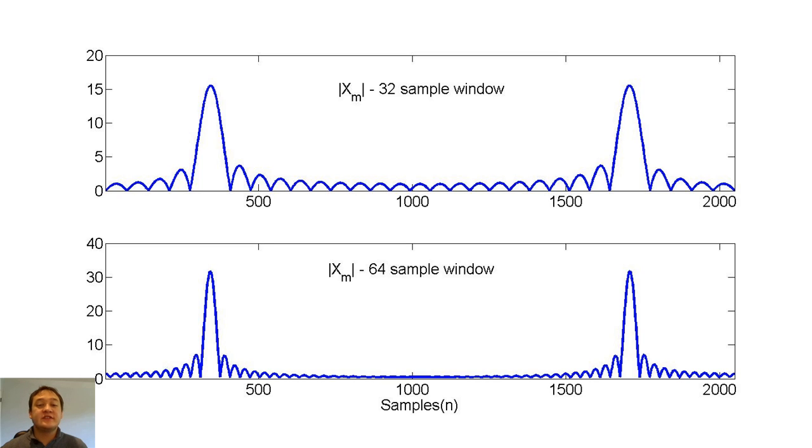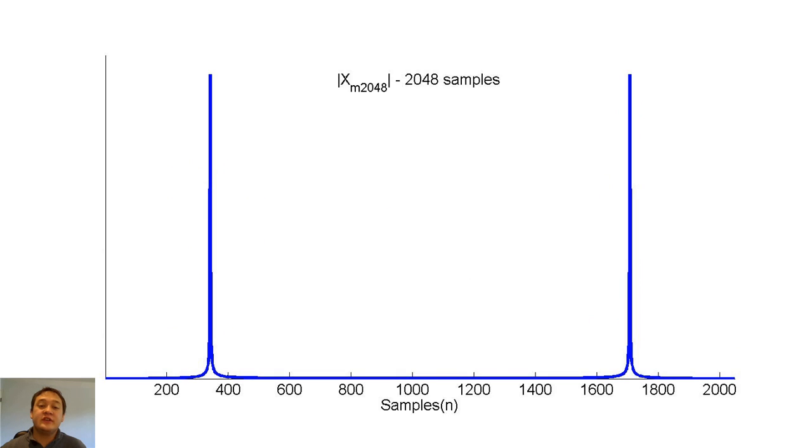Changing the window sizes changes many features of the DFT. In this figure, we can see that the increased window size increases the height of our main lobe, decreases the relative height of the side lobes, and it decreases the width of our main and side lobes. As the window size becomes very large, the DFT of our cosine will become a very good approximation of the two impulse functions.